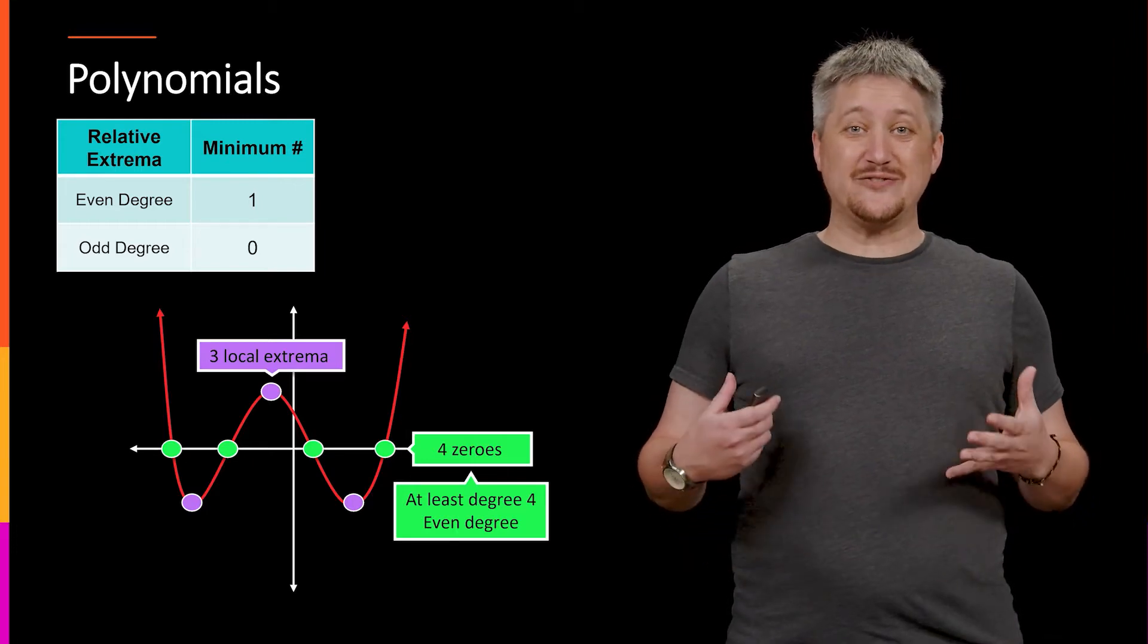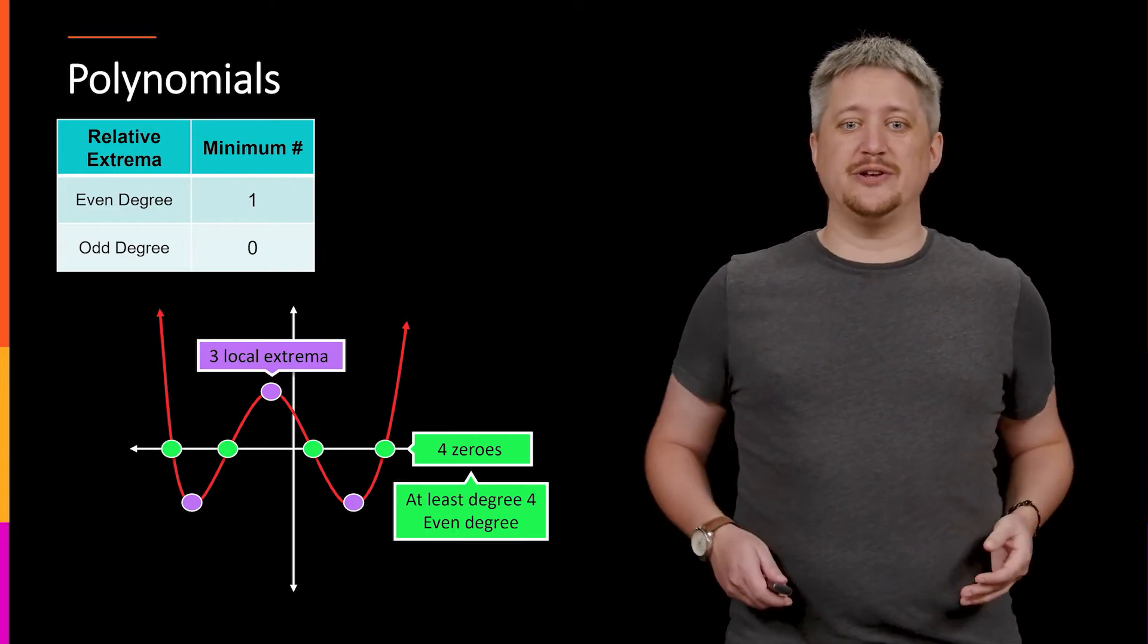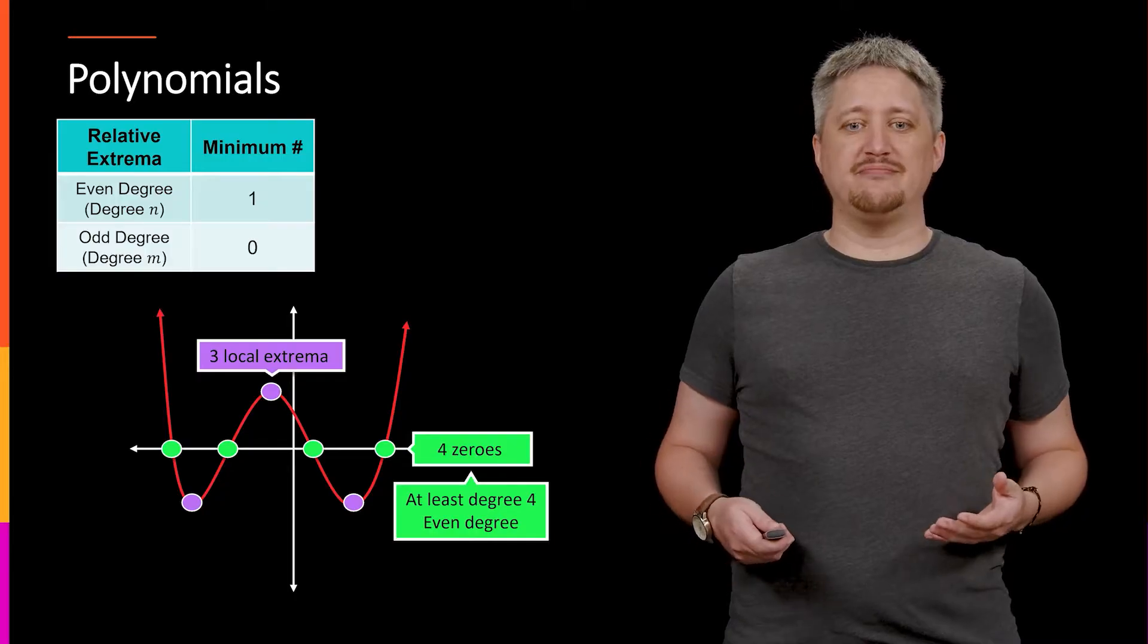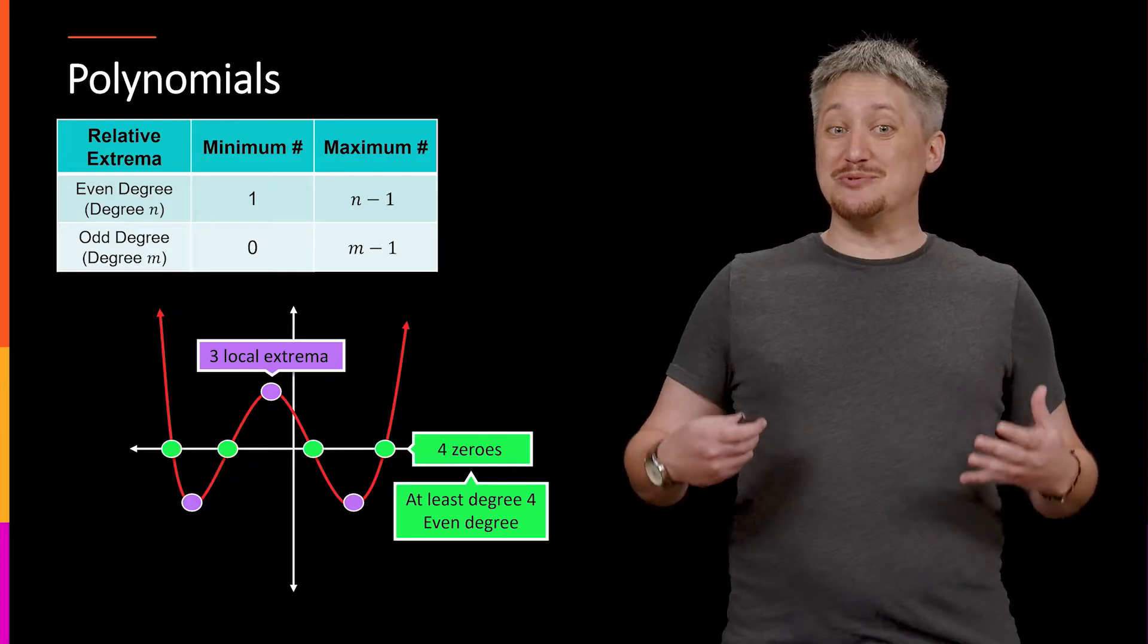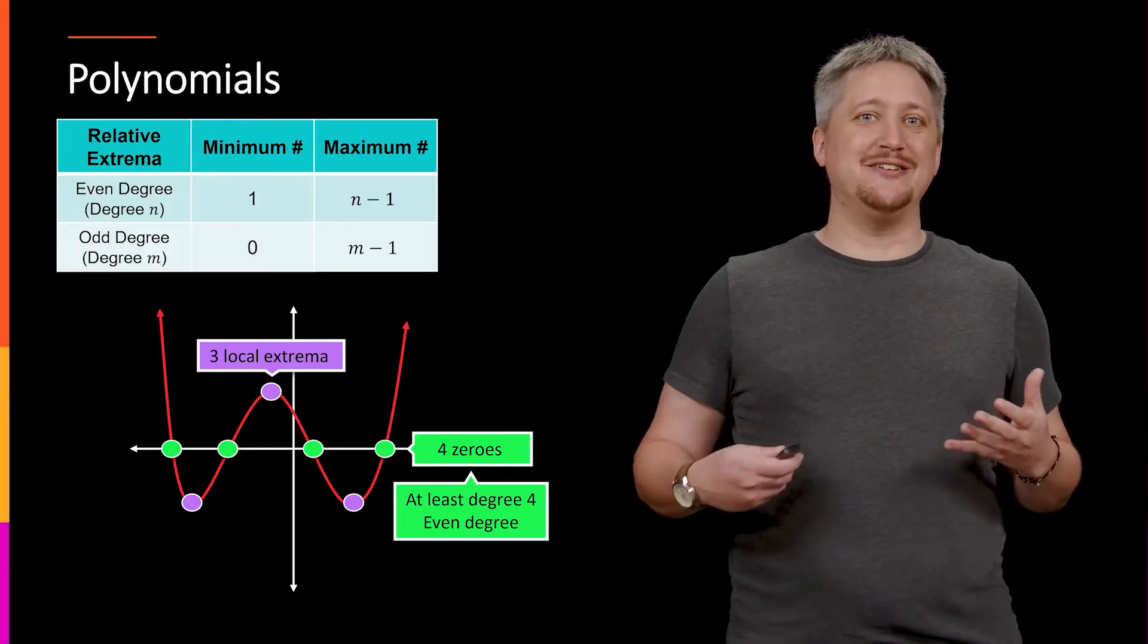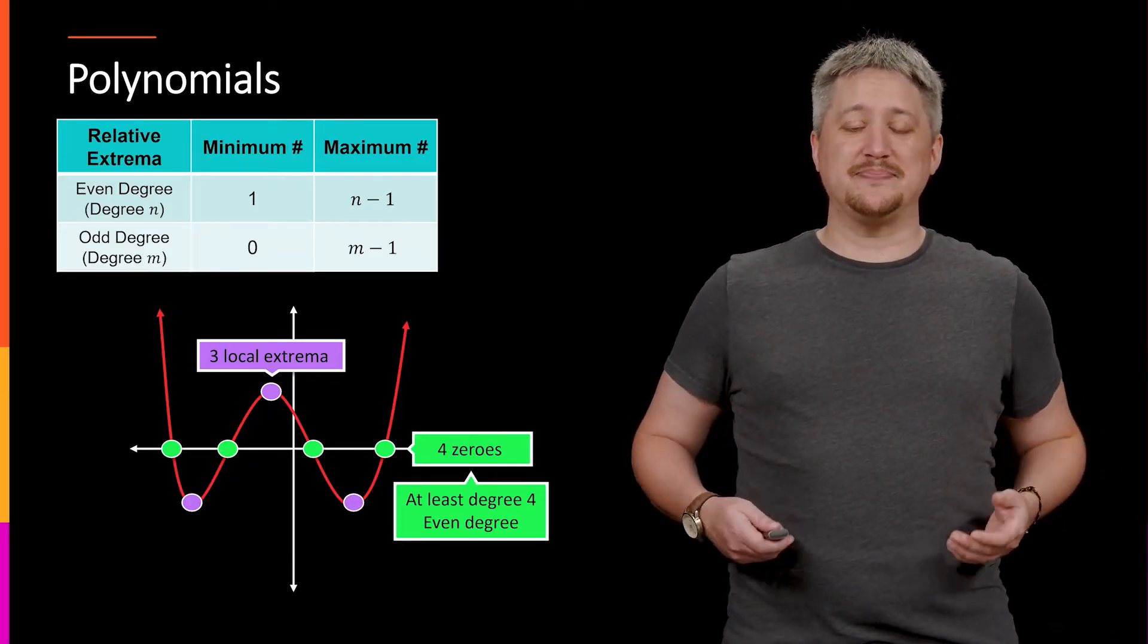So we have at least four degree polynomial or an even degree. And it turns out that this thing is giving us n minus one or the degree minus one number of these relative extrema.